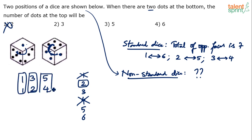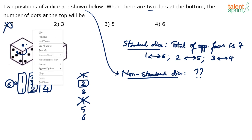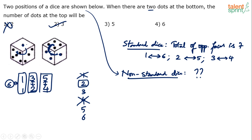Write these as rows: one-three-five and one-two-four. One is common. Whatever appears in the same column position are opposite faces. So two is opposite to three, and five is opposite to four. That leaves one opposite to six. Therefore: if two is at the bottom, three is on top; if four is at the bottom, five is on top; if three is at the bottom, two is on top; if one is at the bottom, six is on top.